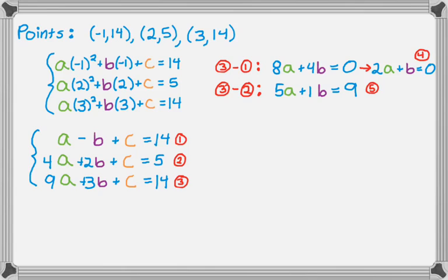So what I'm going to do is equation 5 minus equation 4, and that should give me 3A, the B's cancel, and then 9 minus 0 is 9, and then that gives me A is 3. So now I know what A is.